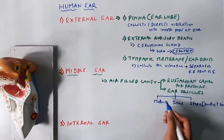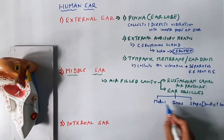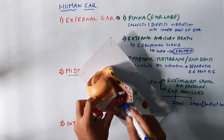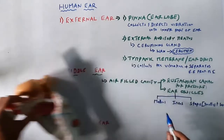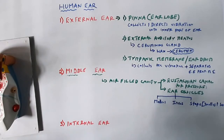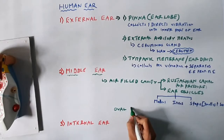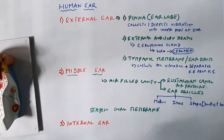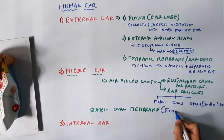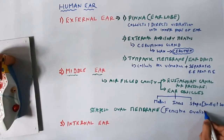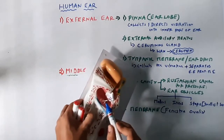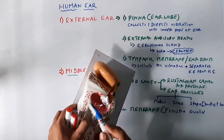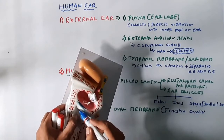The malleus is connected to the eardrum. It connects to the incus, and the incus connects to the stapes. The stapes is then connected to the oval membrane at the beginning of the inner ear. The oval membrane is also called the fenestra ovalis. Vibration collected by the fenestra ovalis from the stapes is then transmitted into the inner ear.